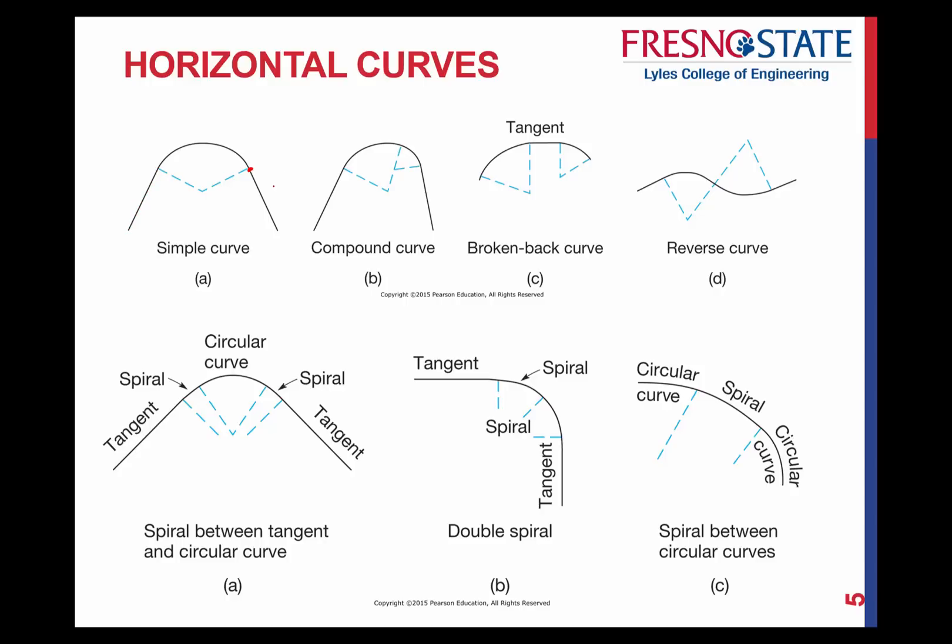Okay, a tangent, or a broken back curve, is where you're now going to be taking, you have a short tangent between two of the curves. It's shown right here. Again, we're not going to be dealing with those very much either. Now, reverse curve, that is where you've got the curves, so the curvature of it are on opposite sides of your highway, or your reference line, or your pipeline, or whatever it may be that you're dealing with.